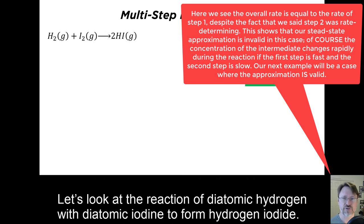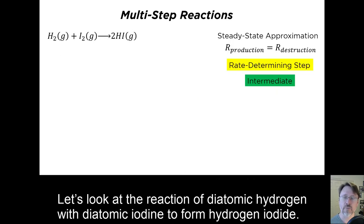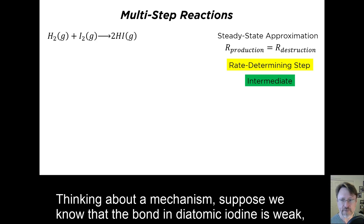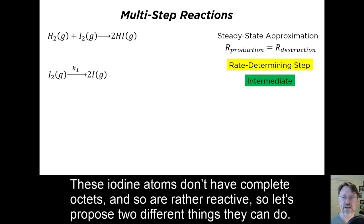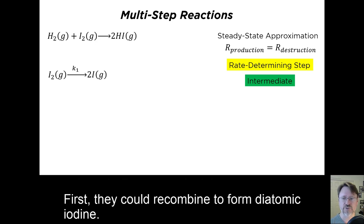Let's look at the reaction of diatomic hydrogen with diatomic iodine to form hydrogen iodide. Thinking about a mechanism, suppose we know that the bond in diatomic iodine is weak, so that the unimolecular dissociation of iodine could plausibly be the first step. These iodine atoms don't have complete octets, and so are rather reactive. So let's propose two different things they can do.